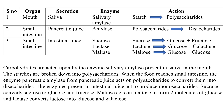The stomach does not have any effect on the digestion of carbohydrates. When the food reaches the small intestine, the enzyme pancreatic amylase, which is present in the pancreatic juice secreted by the pancreas, acts on the polysaccharides to convert them into disaccharides.